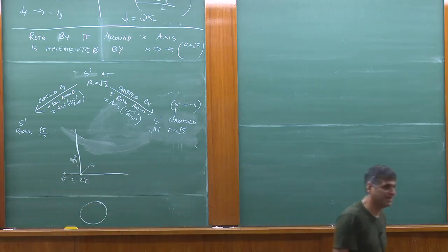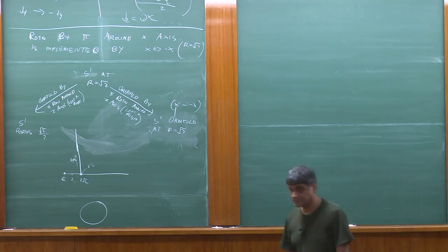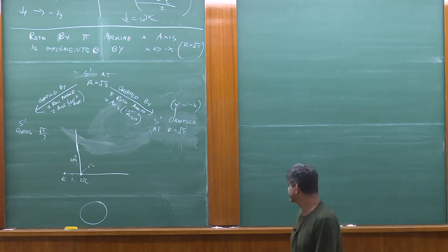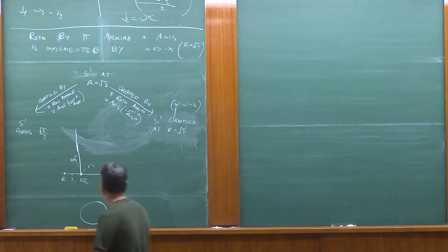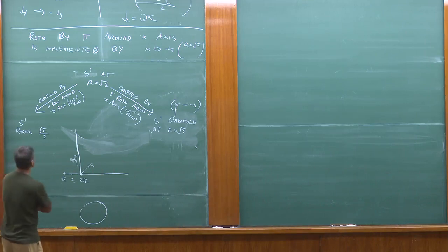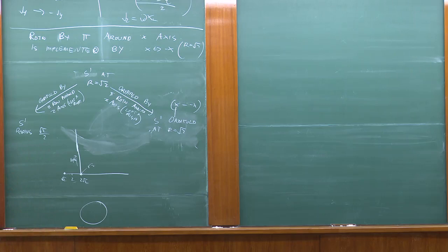So we're claiming this is the actual moduli space of theories. There are the orbifold theories and the circle compactification theories; in general they're different. But at one point they meet in a very non-trivial way: the circle theory at 2√2 is the same as the orbifold theory at √2. Now, how do we check this? We've found explicit expressions for the torus partition functions of both. If this is correct, those two partition functions should be the same when you take the orbifold theory at r = √2 and the circle theory at r = √2/2 or r = 2√2.